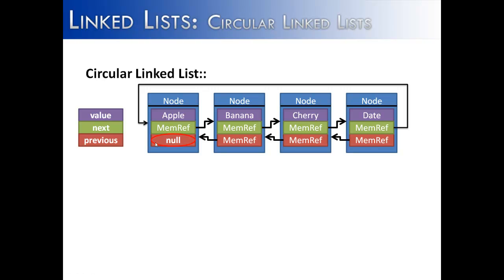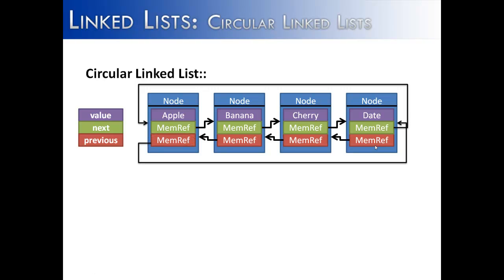If we're going to have a previous node, we're going to point this first node's previous field to the last node over here. So therefore we've made a circular linked list, meaning that the front is pointing to the end and the end is pointing to the front.